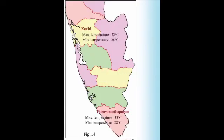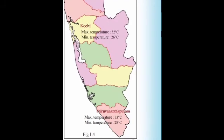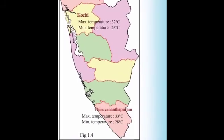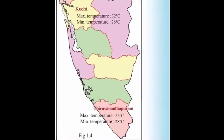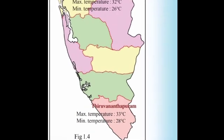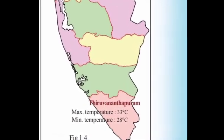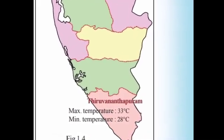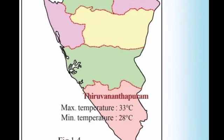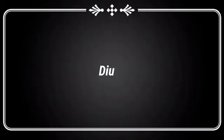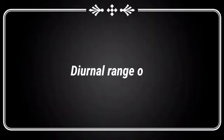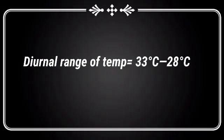Observe the map. In Thiruvananthapuram, the maximum temperature is 33 degrees Celsius and minimum temperature is 28 degrees Celsius. Find out the diurnal range of temperature. Diurnal range of temperature is equal to 33 degrees Celsius minus 28 degrees Celsius, that is equal to 5 degrees Celsius.